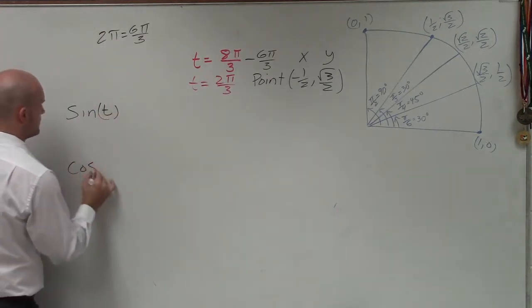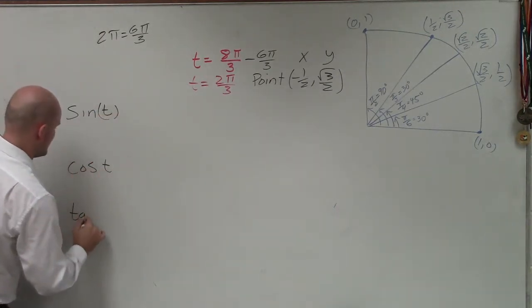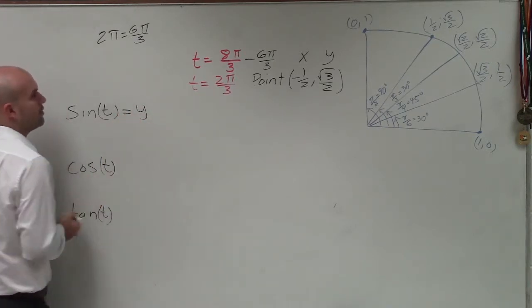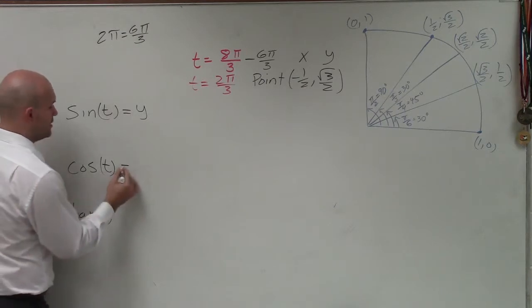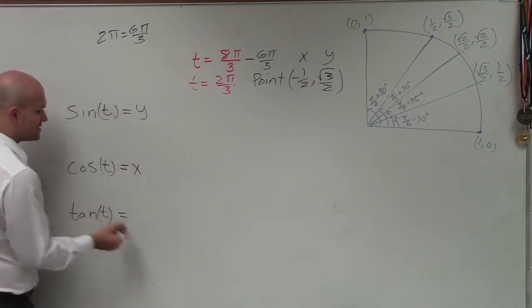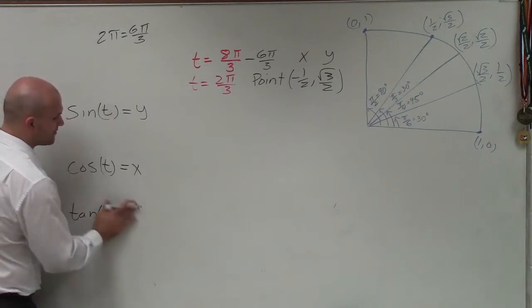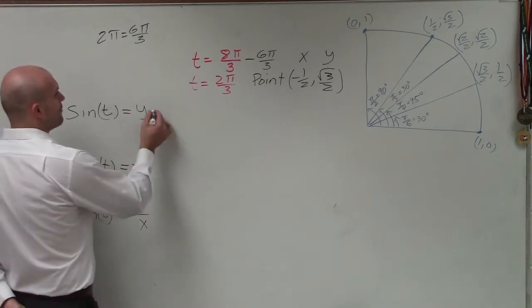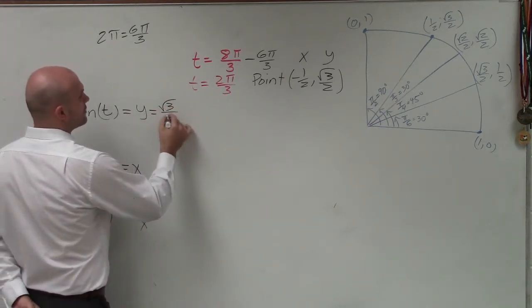Sine of t, cosine of t, and tangent of t. Now remember, when we're doing the sine of t, that just represents the y-coordinate on the unit circle of your point. The cosine represents the x-coordinate of your point on the unit circle. And the tangent t represents the y-coordinate over the x-coordinate.